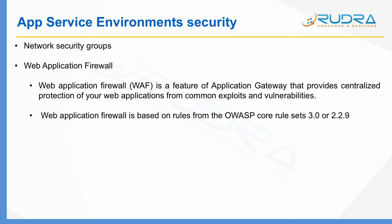You can also associate network security groups to control the type of traffic coming into your App Service. You can also place a front-end like Application Gateway before your App Service Environment. This Application Gateway includes a Web Application Firewall feature that provides centralized protection from common exploits and vulnerabilities, including industry-standard rule sets that safeguard against attacks like SQL injection.